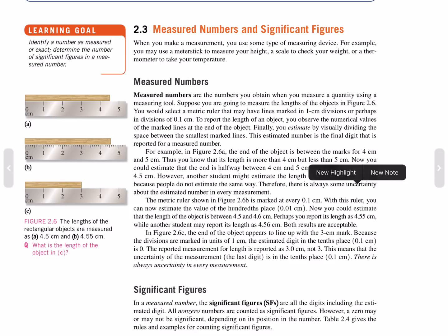For example, in Figure 2.6a, the end of the object is between the marks for 4 cm and 5 cm. Thus, you know that its length is more than 4 but less than 5 cm. You could estimate that the end is halfway between 4 and 5 and report the length as 4.5 cm. However, another student might estimate the length as 4.4 cm because people don't estimate the same way. Therefore, there is always some uncertainty about the estimated number in every measurement.